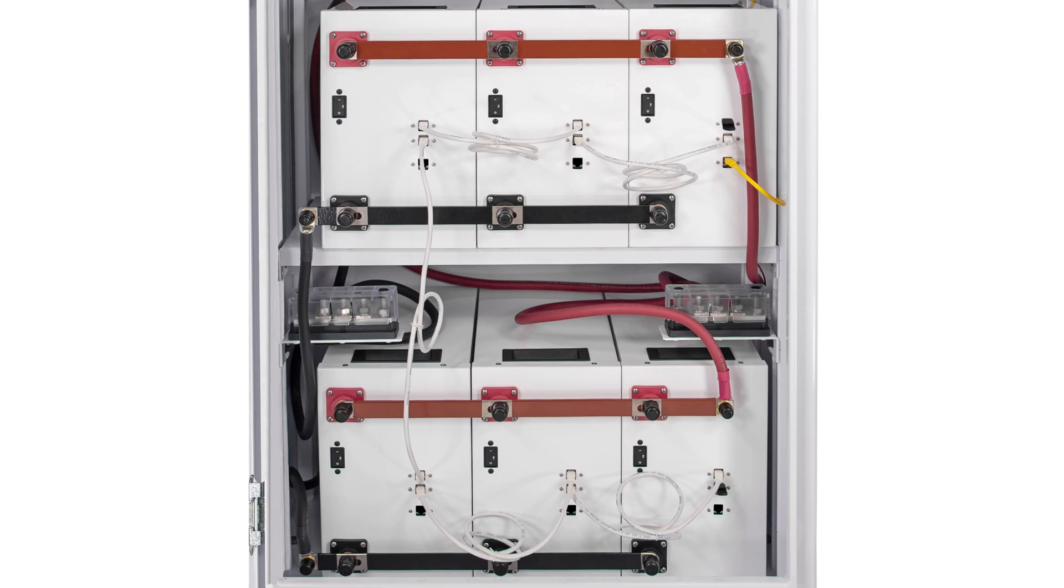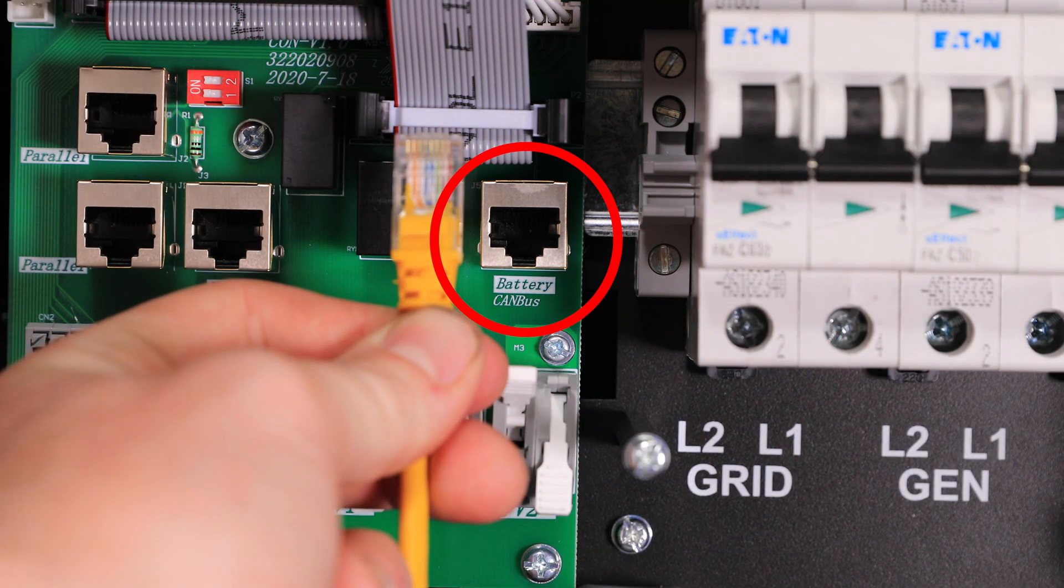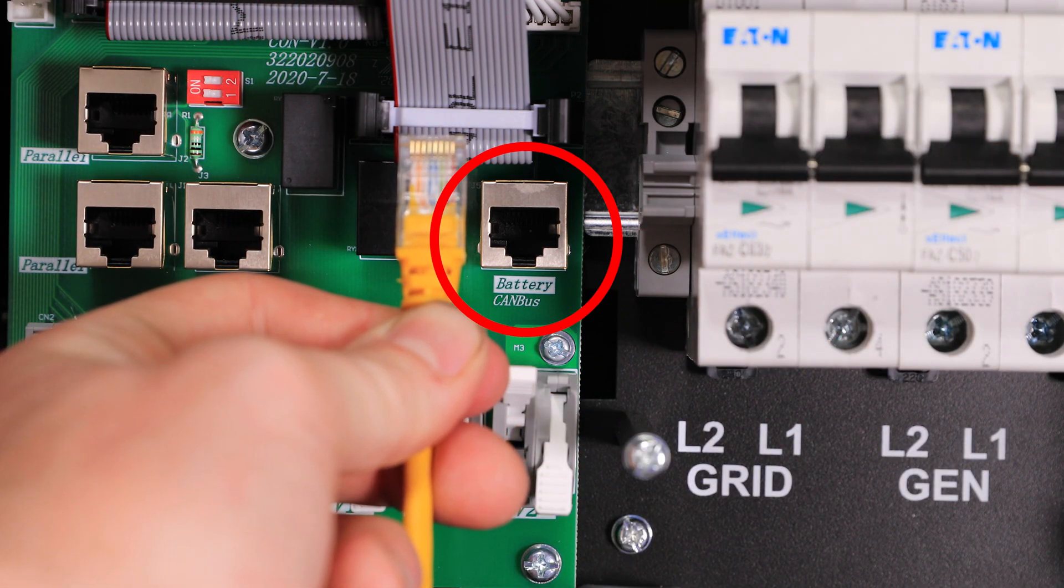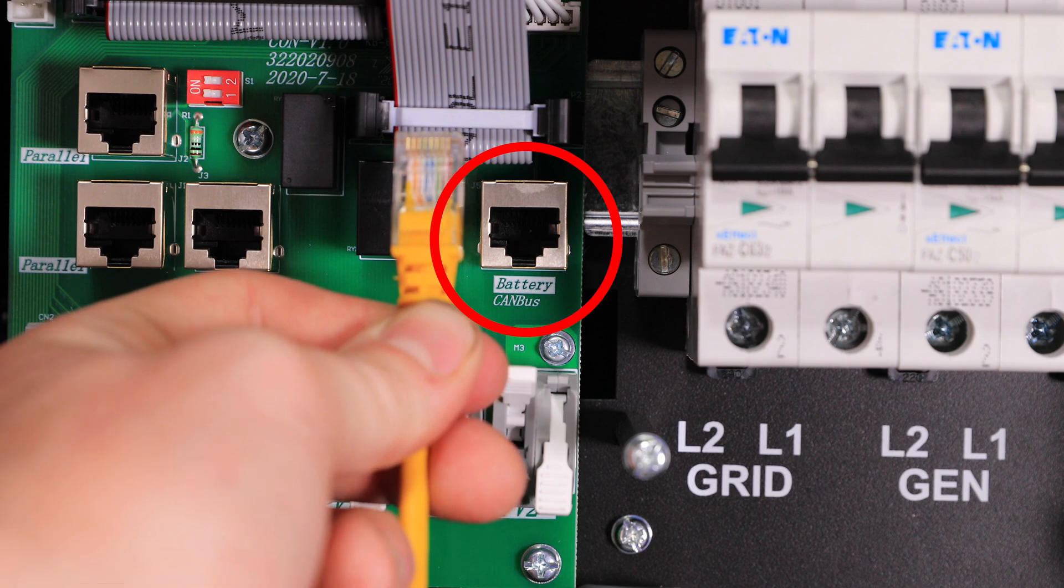Last, use a Cat5 cable not longer than 40 feet to connect only one battery in the bank to the inverter. This cable will connect to the port labeled device on the battery and the port labeled battery canvas on the inverter. This cable is not included with individual batteries but can be easily sourced.